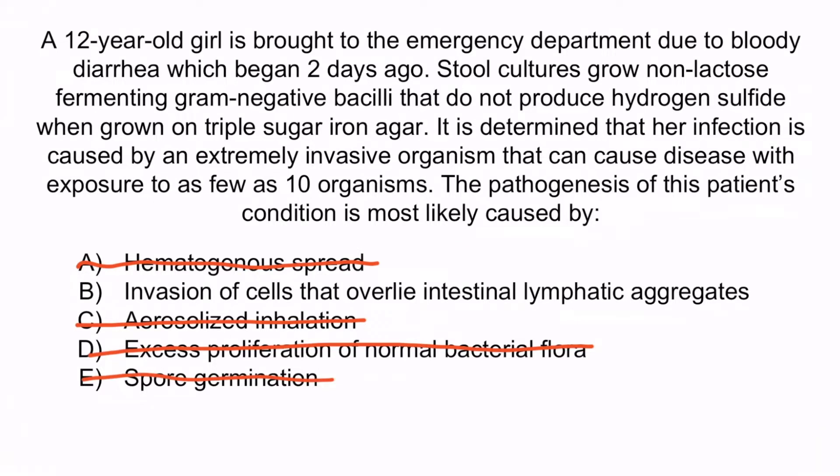E is incorrect because Shigella is not spore-forming — if you chose this, you may have been thinking of C. diff, which can cause watery diarrhea and is a spore-forming organism. So again, the correct answer is B — invasion of cells that overlie intestinal lymphatic aggregates. And with that, we've covered everything you need to know about Shigella.